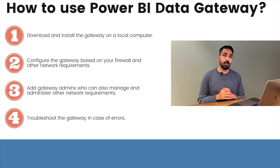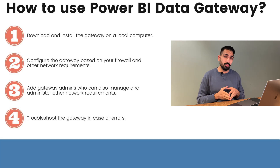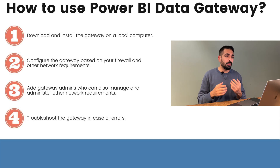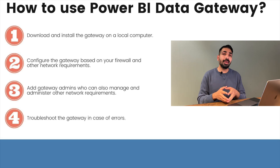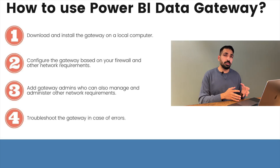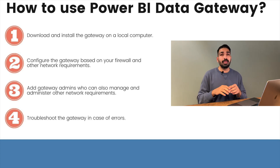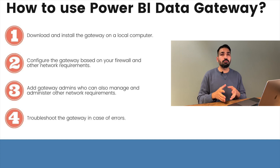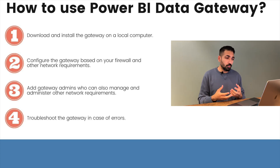Now, how do you use Microsoft Power BI Data Gateway? You follow four steps. First, download and install the Standard Mode version only. Second, configure the gateway and fulfill your firewall and network requirements. Third, add a gateway admin who can manage and administer network requirements — including recovery keys and monitoring whether the gateway is running. The last step is to troubleshoot the gateway in case of any errors.